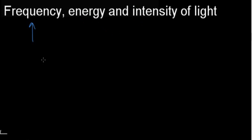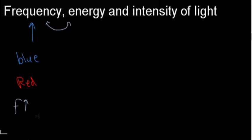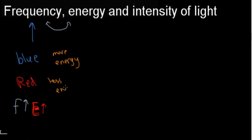Frequency is associated with light just like it is associated with any sound - it's just the frequency of the wave. When we're taking visible light, we can say blue has a certain frequency and red has a different frequency. What we need to know is that each frequency is associated with energy - these two are linked. The higher the frequency, the higher the energy. The bluer lights are going to have more energy, whereas the red lights are going to have less energy.